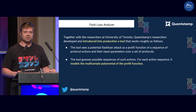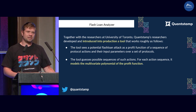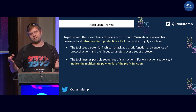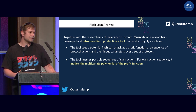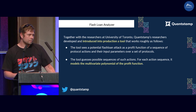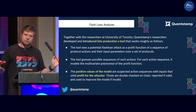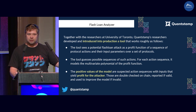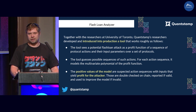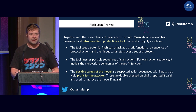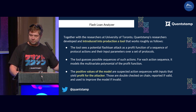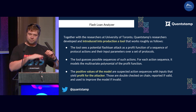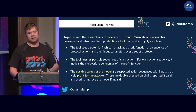If you sequence these actions with particular parameter values, you get back a value representing what you would receive as an attacker. If this profit function is positive, you make money; if negative, you don't. If you ran everything inside a flash loan call and the result is negative, the transaction would revert because you couldn't repay the loan. So we generate a large number of random sequences of actions and parameters, evaluate the attacker's profit, and model this multivariate polynomial.